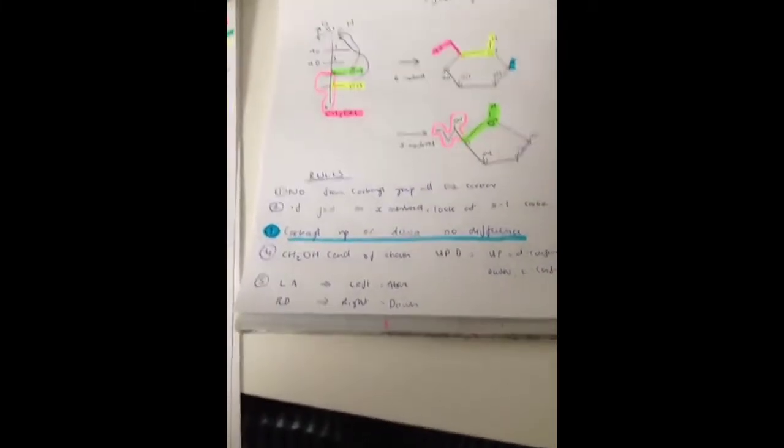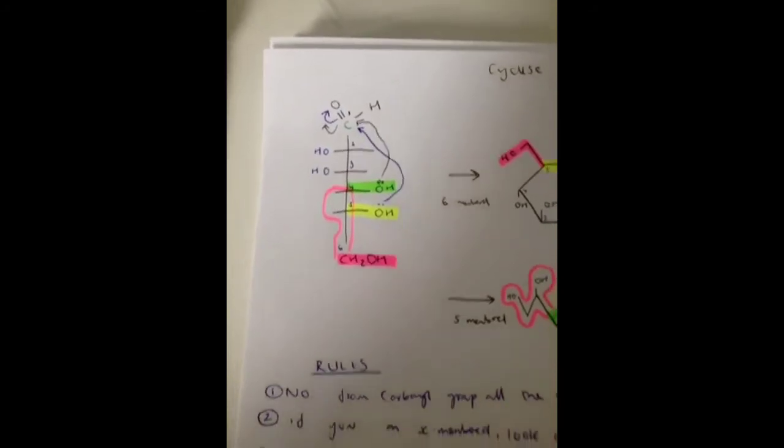The first one is that you have to number the carbonyl groups. So as you can see I've numbered them all from the carbonyl groups: 1, 2, 3, 4, 5, 6.